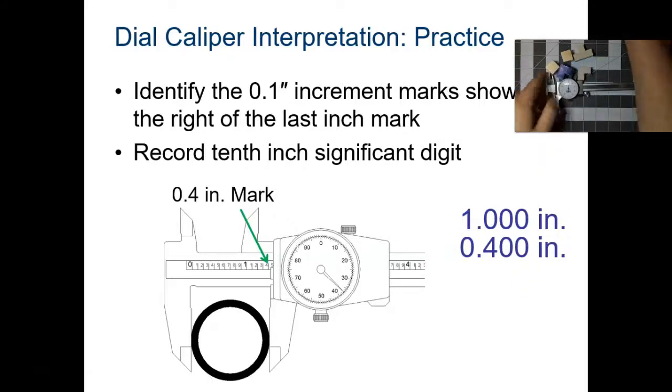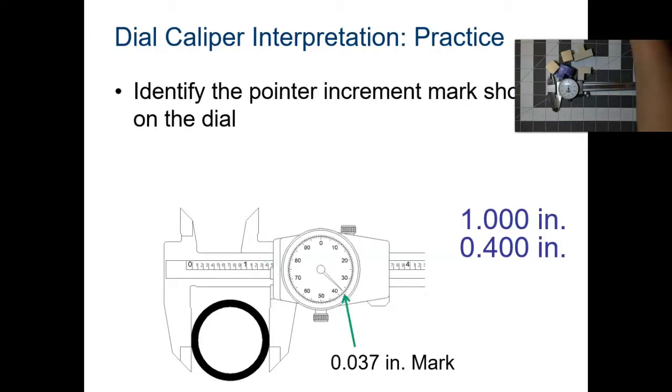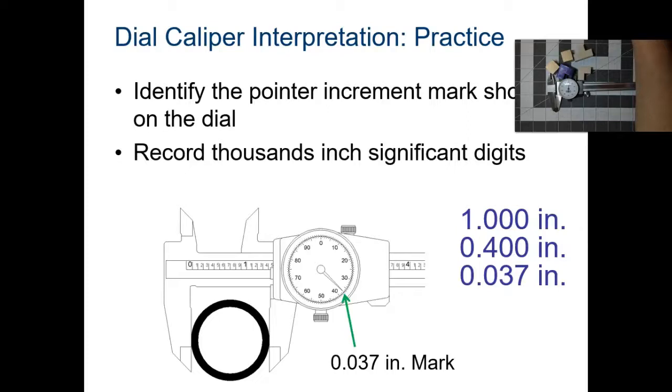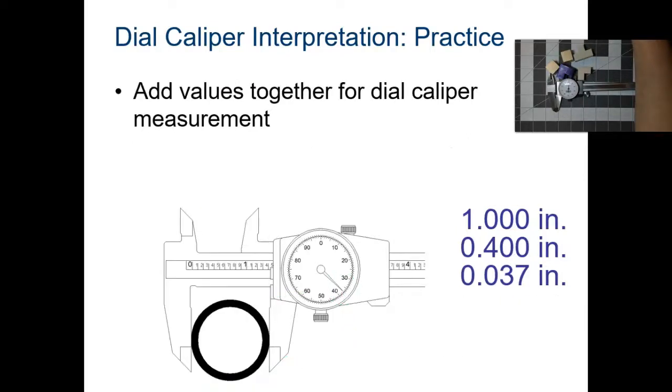After you do that, you keep going. You look at the dial itself. The dial is at the 0.037 mark. So you would literally just count the number on the dial, and you would record that. So when you put this all together, you get 1.437.